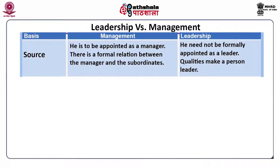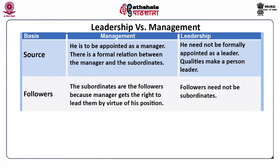Now there are many bases of difference between management and leadership. First is source — position makes a person a manager; he is to be formally appointed, creating a formal relation between the manager and subordinates. But in case of leadership, qualities make a person a leader. He need not be formally appointed. Personal traits and expertise over the job may also make a person a leader. Second is followers — in management, subordinates are the followers because managers get the right to lead them by virtue of their position. But for a leader, followers willingly follow because they accept him as their leader, and they need not be subordinates.